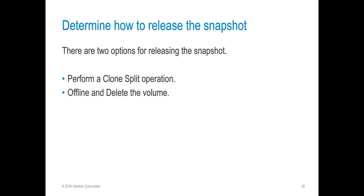So how do we release the snapshot? We have a couple of options: we can either perform a clone split, or we can offline and delete the clone volume. The flex-clone may be out there for many reasons, such as test-dev, restoration, or backup verification from one of our SnapManager products. If there's enough space in the aggregate and you still need to keep the clone volume, then you'll want to perform the split. Otherwise, if the business no longer needs the clone, you can offline and delete the volume.